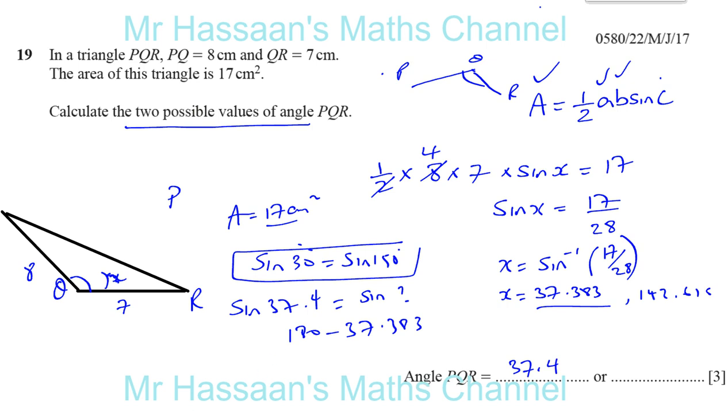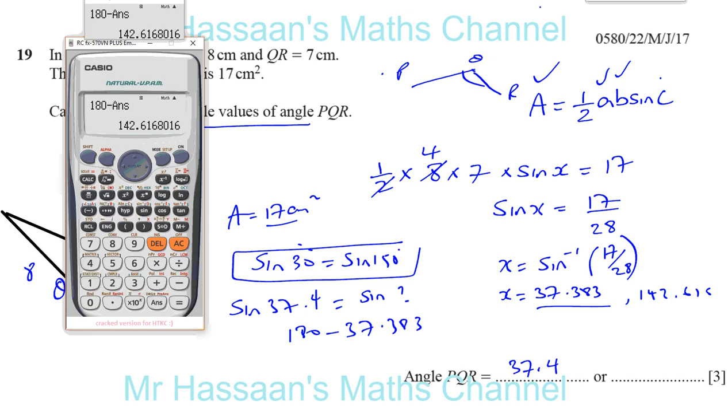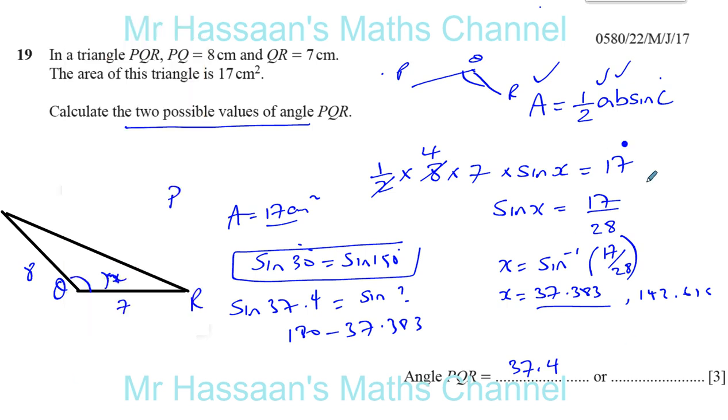Let me just make sure. 142.616. Yes. Okay. So now those are our two answers. That's one. 142.616. Now, angles should always be given to one decimal place. Normally, if this was a length, I'd write 143 because it's 3SF. It's an angle.